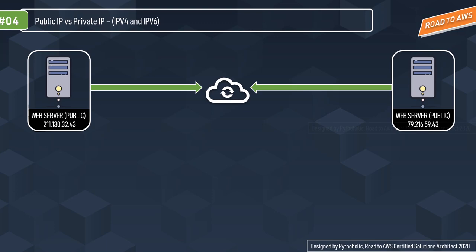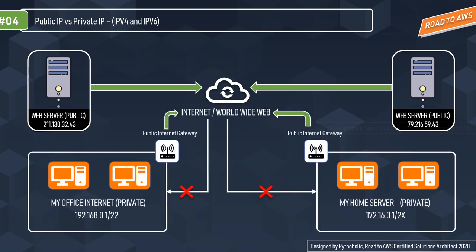If you are in a private space like an office or private home server, things are different. A private office internet has provision to communicate within its own network but not outside without the help of a public internet gateway — that's why we call them private. They have an isolated scope accessed within the network, and cannot be accessed globally unless you have a VPN connection or something that grants you access.